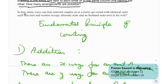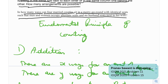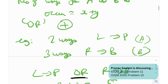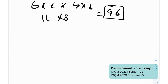In how many ways can four married couples sit in a merry-go-round with identical seats, such that men and women occupy alternate seats and no husband sits next to his wife? This was the 11th question in the IAQM out of 12 total, making it a relatively hard question for that exam — and it was worth 5 marks. Yet you can see how easily you can score those marks. The merry-go-round is circular, so this is a circular permutation problem.